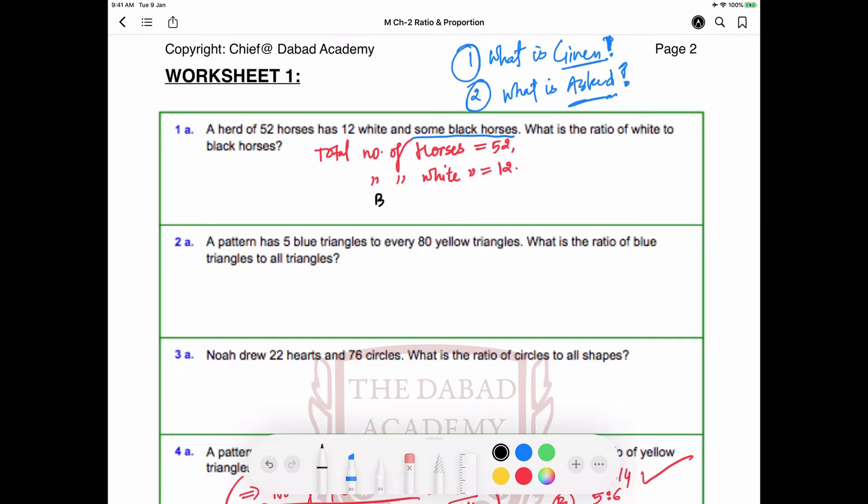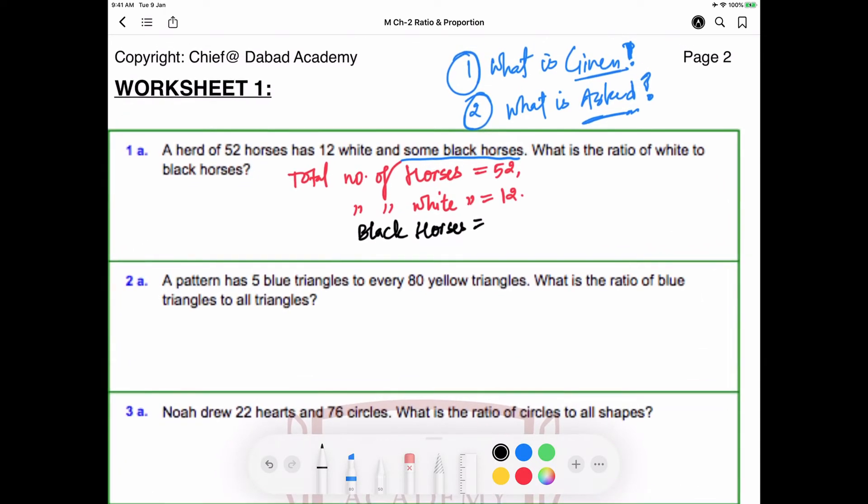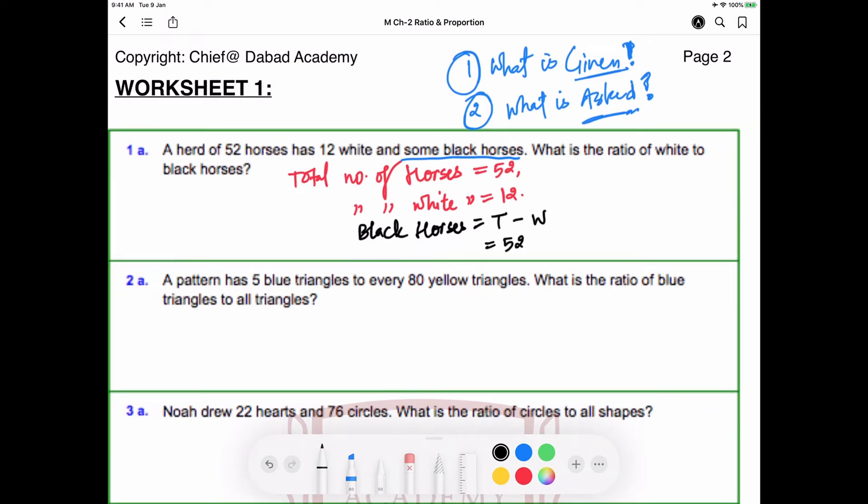To find out black horses, what we will do is take the total number of horses and subtract white horses. Total minus white: 52 minus 12 equals 40.